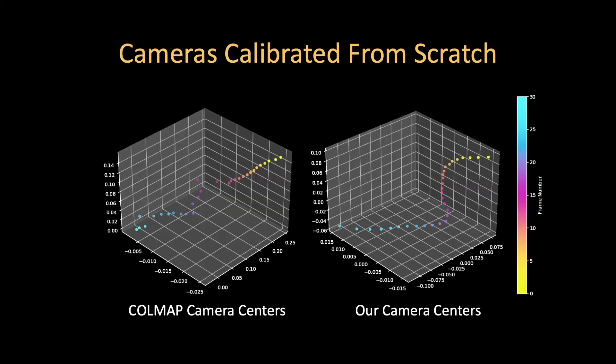Often, erroneous camera calibration from structure from motion can cause problems for dynamic scenes. Instead, we optimize for camera poses from scratch during training. Without time-of-flight information, this problem by itself is challenging, but our approach provides this at almost no cost. Note the smoother camera trajectory for our recovered poses versus Colmap's recovered poses.